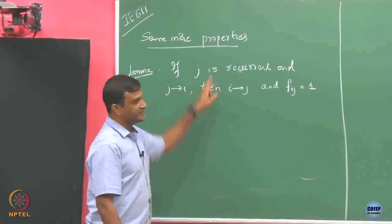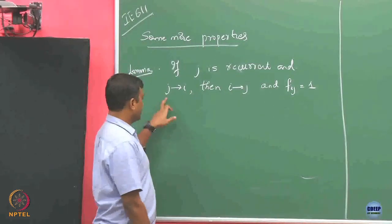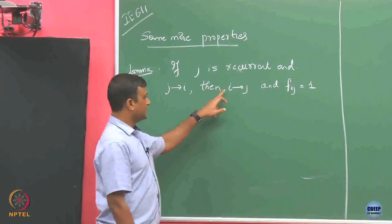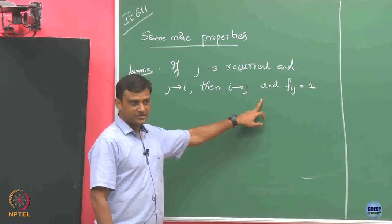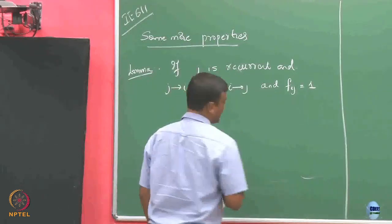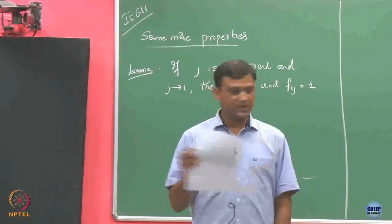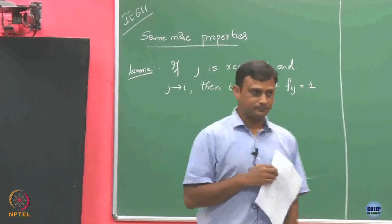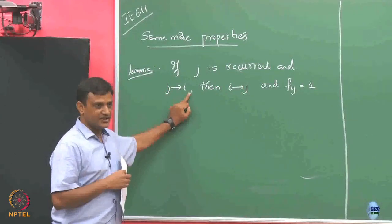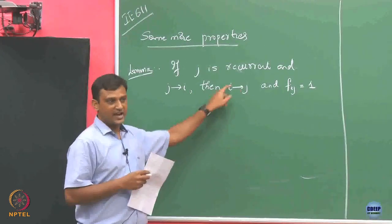Suppose you know that J is a state which is recurrent. If J communicates with I, then is it obvious that from state I you have to come back to state J? That means I communicates with J. We are saying J is recurrent, so by our notion of recurrence, I should be hitting state J again and again — coming back to this state with probability 1.